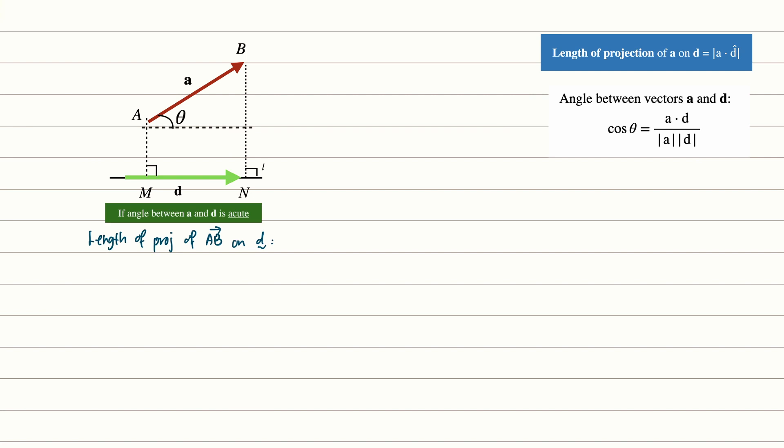Now the length of projection of vector ab on d will then be equal to mn over ab equals to cosine theta. Think about this from a trigonometric ratio perspective which is the adjacent over the hypotenuse giving us cosine theta. Now because we are only interested in the length of projection of vector ab onto d, let's make mn the subject which gives us ab cosine theta.